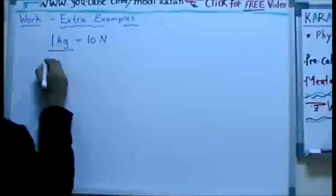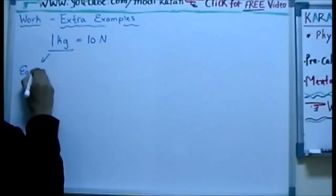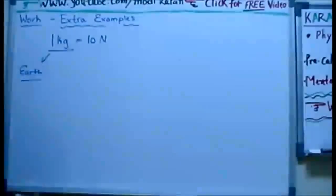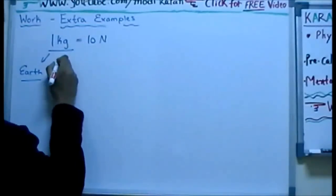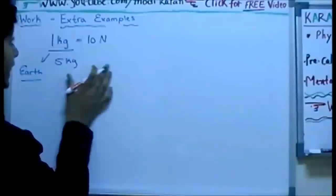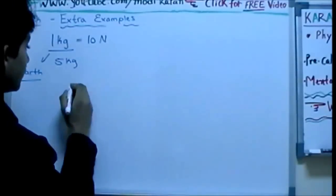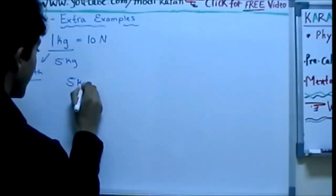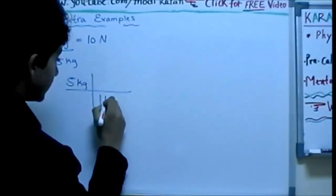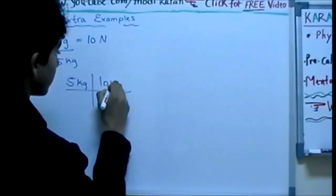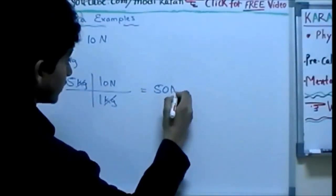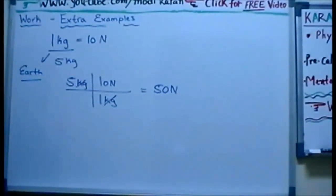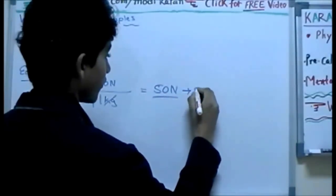And this should be on earth. The mass of the brick is 5 kg. Let's go ahead and convert 5 kg into newtons. We start off with 5 kg and we know that 1 kg is equal to 10 newtons. The kg cancels out and you are left with 50 newtons. So you already found the force, because force is in newtons.